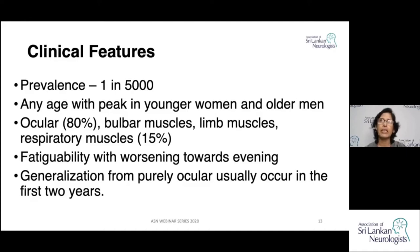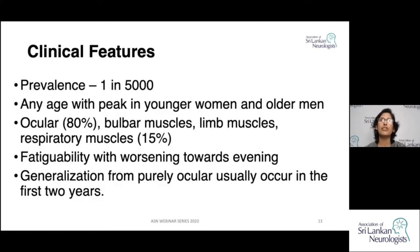So the person with ptosis: as you watch, if you ask them to keep looking up, you see drooping of the eyelid. The person with bulbar involvement: as you watch them talking, you see that the voice tends to fade. The person with pelvic muscle involvement: if you ask them to climb steps, they may manage a few initial steps, but as they climb further, they find it increasingly difficult.